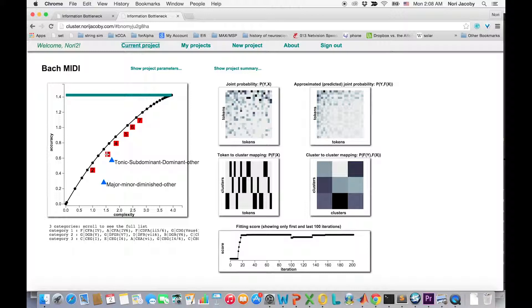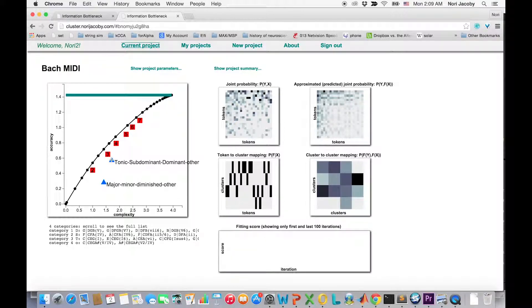Let's look now on the optimal categorization to three deterministic clusters computed from the algorithm. This categorization scheme is clearly similar to the textbook categorization into tonic, subdominant, and dominant. Furthermore, the predetermined categorization performs quite similarly.